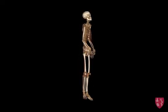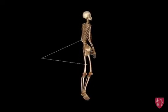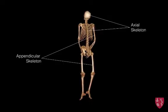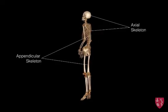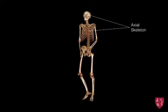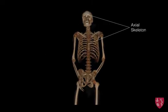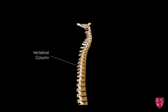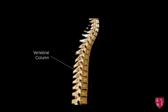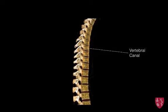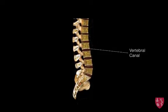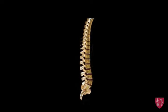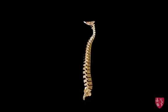The human skeleton can be divided up into an appendicular and axial skeleton. The appendicular applies to the limbs, while the axial consists of the skull and the vertebral column. The vertebral column functions to protect the spinal cord, which courses through the vertebral canal. Additionally, it supports the weight of the body and serves as a site of muscle attachment and protection for the internal organs.